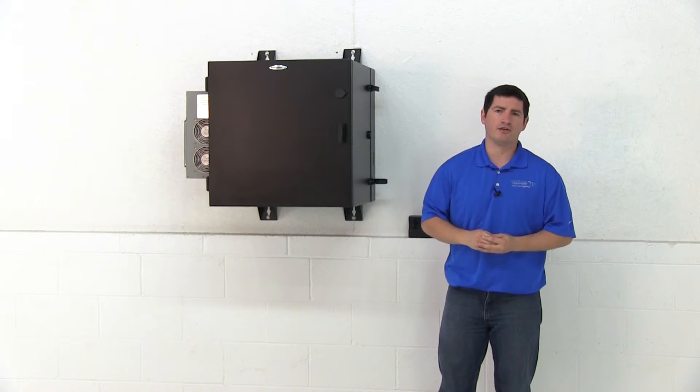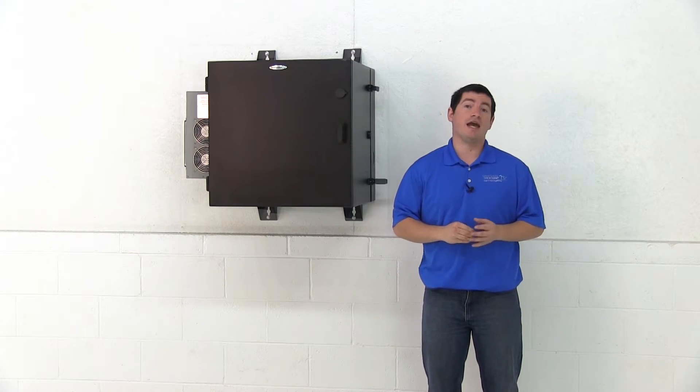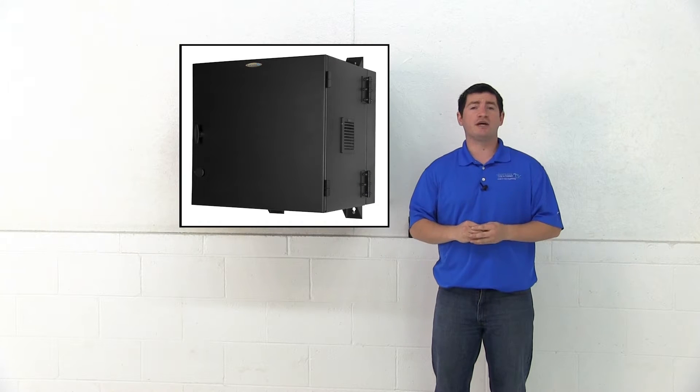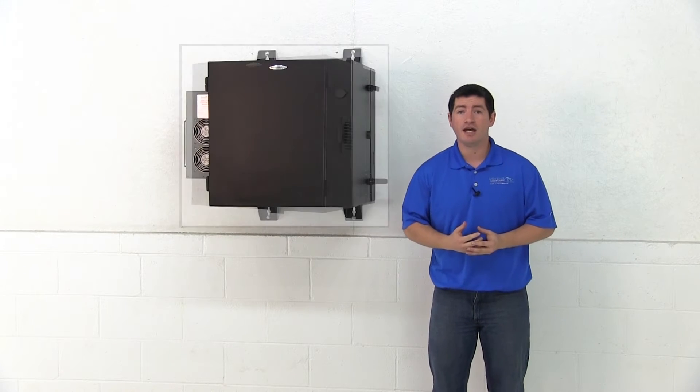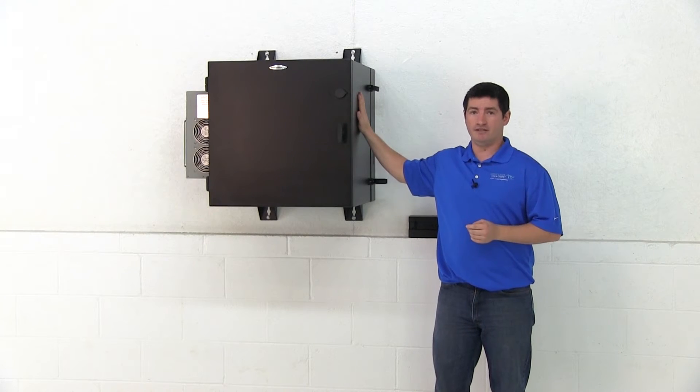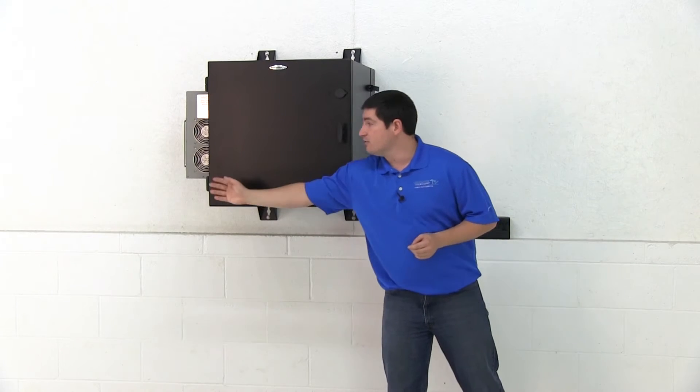NEMA 12K wall mounts are available in two series, N12 wall mounts which accept fan and filter assemblies and N12A wall mounts which accept AC units.